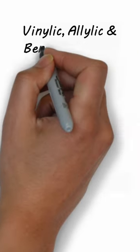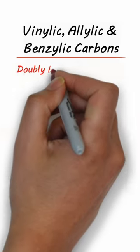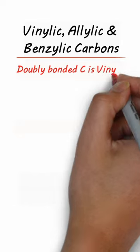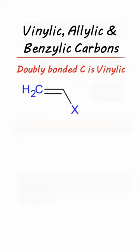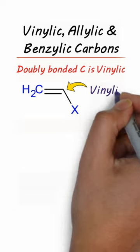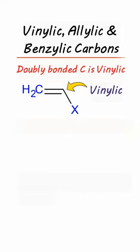Vinylic, allylic, and benzylic carbons. A doubly bonded carbon is called a vinylic carbon. For instance, the carbon shown here is a vinylic carbon because it's a doubly bonded carbon. X attached to it is any functional group.